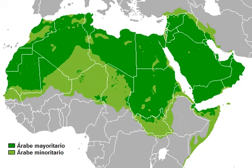Arabic — also written Al-Arabiya — is a central Semitic language that first emerged in Iron Age northwestern Arabia and is now the lingua franca of the Arab world.